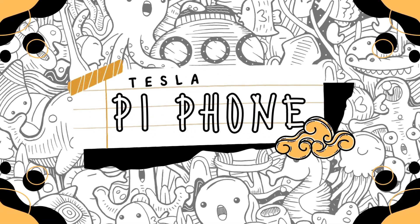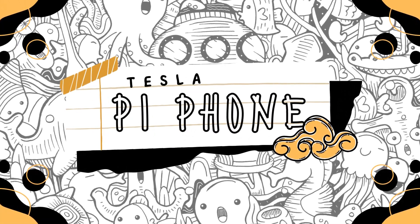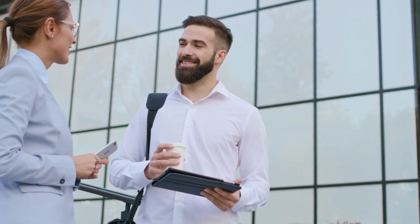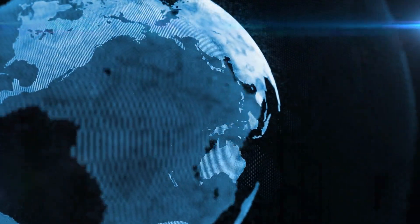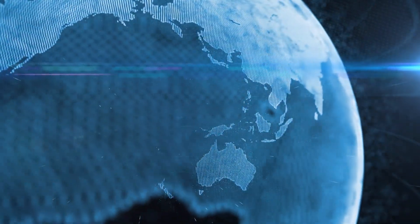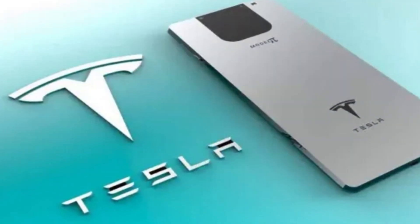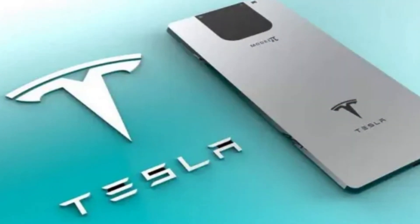Is Tesla working on the Pi model phone? In the ever-changing world of technology, rumors about any influential company's next move tend to circulate. One such speculation that has piqued the interest of tech aficionados all over the world is the possibility of a Tesla smartphone, informally nicknamed the Model Pi or Pi.